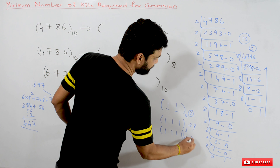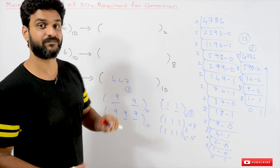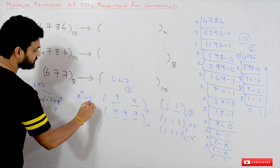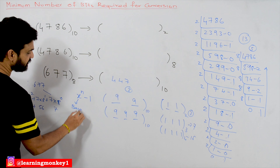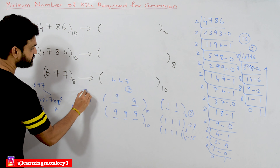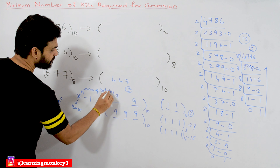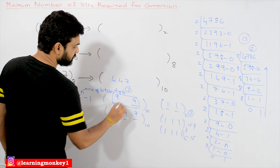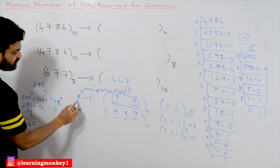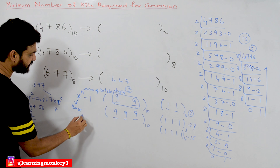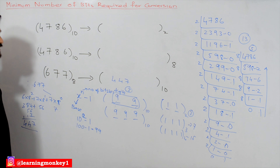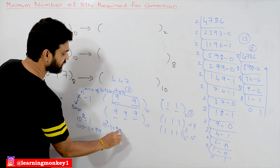So how do we find the maximum number possible with a given number of digits? The formula is: X^N − 1, where X is the base and N is the number of bits or digits. For example, with two decimal digits: 10^2 − 1 = 99. With three decimal digits: 10^3 − 1 = 999. With two binary digits: 2^2 − 1 = 3. With three binary digits: 2^3 − 1 = 7.